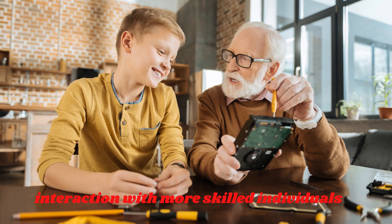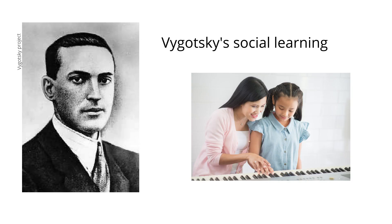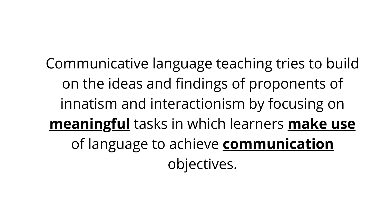An ideal situation for CLT is interaction with more skilled individuals — in the case of language learning, those who are more proficient in the language. This is very similar to Lev Vygotsky's concept of social learning, in which a more skilled individual helps a learner acquire the skills that the learner could not acquire by just working alone. In conclusion, communicative language teaching tries to build on the ideas and findings of proponents of innatism and interactionism by focusing on meaningful tasks in which learners make use of language to achieve communication objectives.